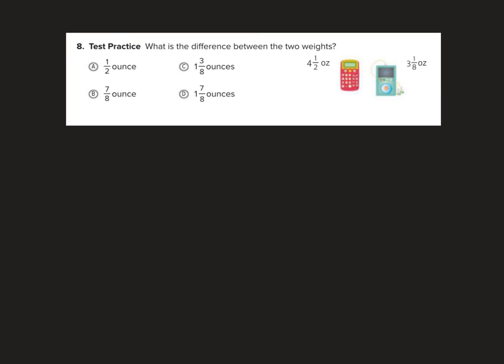Okay, real quick here, what's the difference between the two weights? 4 and 1 half ounces minus 3 and 1 eighth. I'm still going to go by the whole numbers to see which one goes on top. Okay, so I need to multiply by 4, multiply by 4, and I'm going to get 4 eighths minus 1 eighth. That would be 3 eighths, and 4 minus 3 would be 1. 1 and 3 eighths ounces is the difference. That's all I have for you today. Thanks for watchin'.